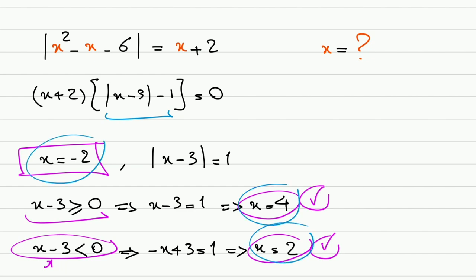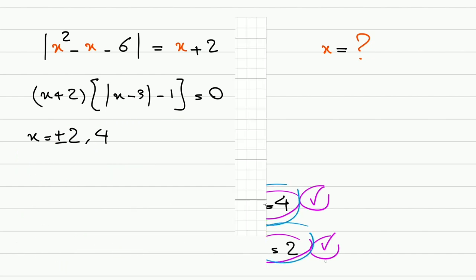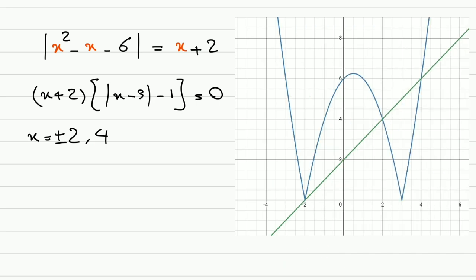2, negative 2, and 4. These are the three answers. And now let's take a look at the graph so that we can understand what's going on here. The blue one is the absolute value of x squared minus x minus 6. And the green one is x plus 2. And these are three intersection points at negative 2 and 2, and this one is 4. Three answers, three roots for this equation.